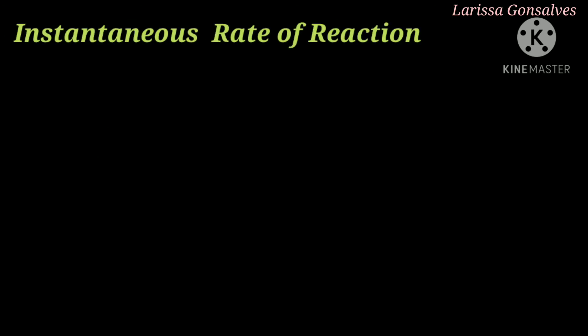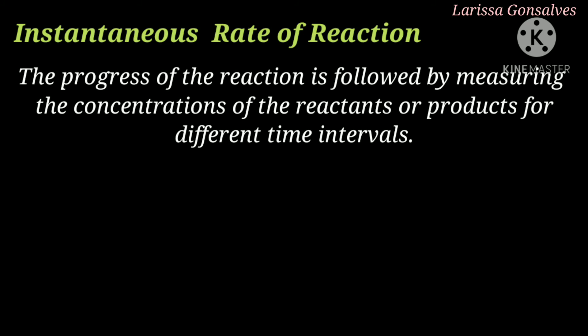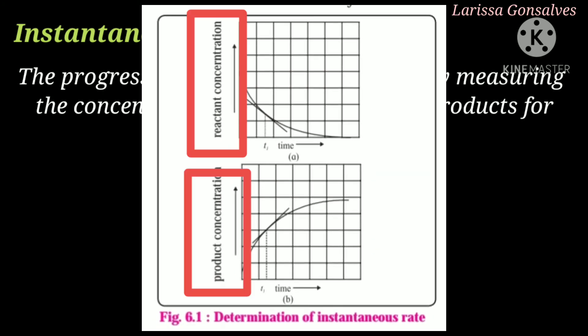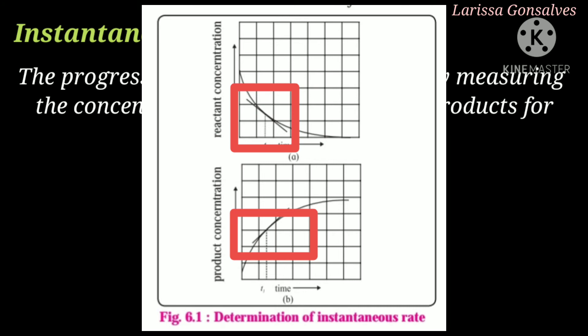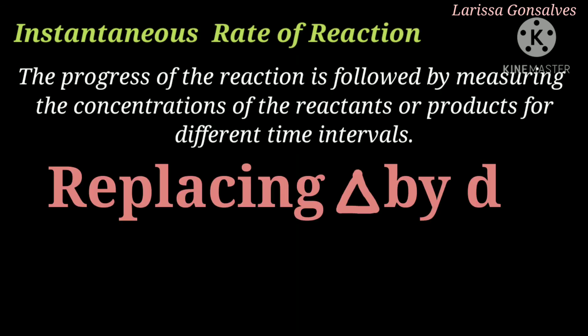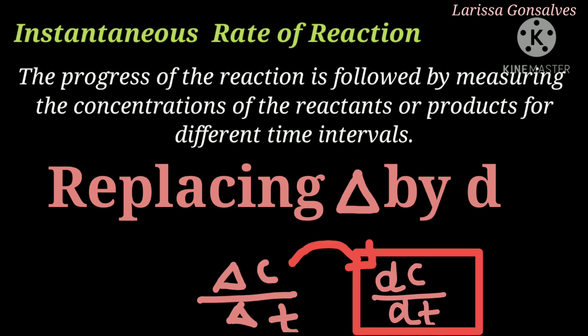The next topic is instantaneous rate of reaction. To determine the instantaneous rate of reaction, it is necessary to measure the concentration of reactants and products at different time intervals. The change in concentration is really fast in the beginning, which becomes slow later. Observing the two graphs, concentration of reactant and product is plotted against time. The tangent drawn at the curve T1 gives the rate of reaction, and the curve gives information about the instantaneous rate at time T. For instantaneous rate, we use dC/dT instead of ΔC/ΔT.